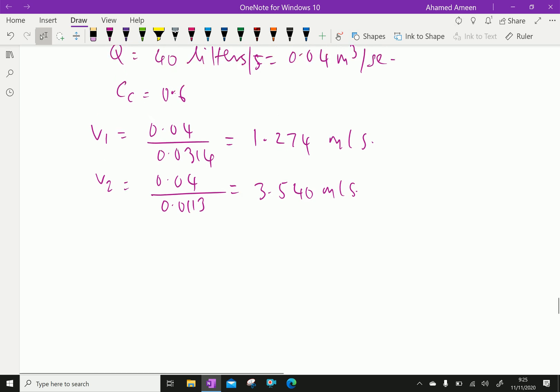Head loss due to sudden contraction, that is Hc equals V2 square by 2g, 1 over Cc minus 1 the square, which is equal to V2 is 3.54 square over 2 into 9.81, 1 over Cc is 0.6 minus 1 the square.